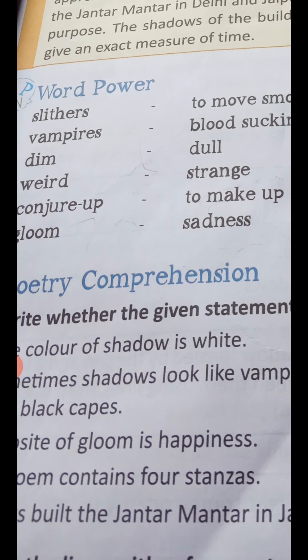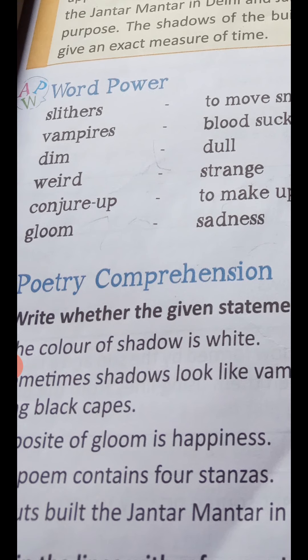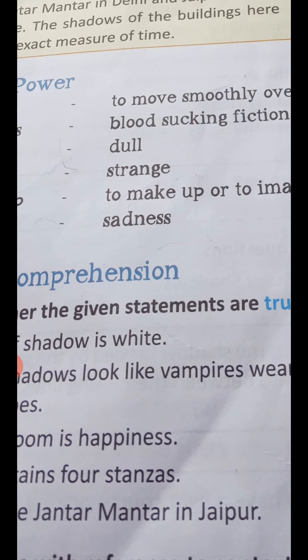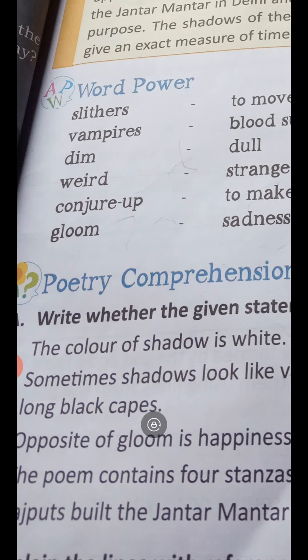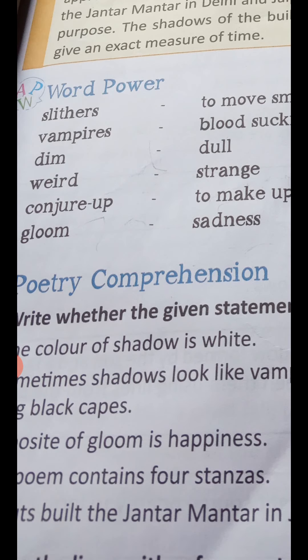'Weird' — weird means strange. 'Dim' — dim means dull. 'Weird' can also be translated as anokha, ajnabi, or ajib. 'Conjure up' means to make up or to imagine. 'Gloom' — gloom means sadness, udaasi.